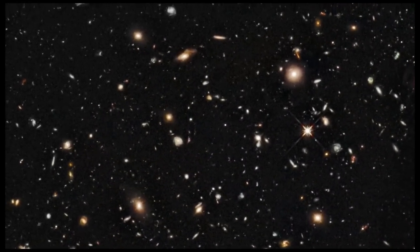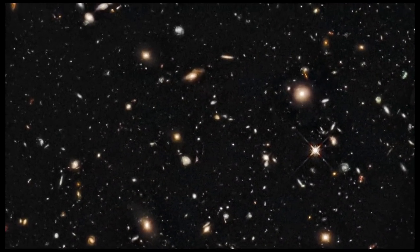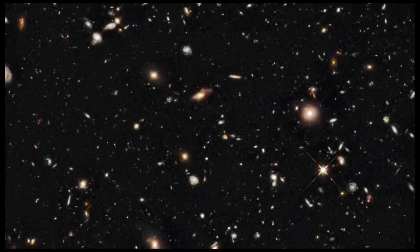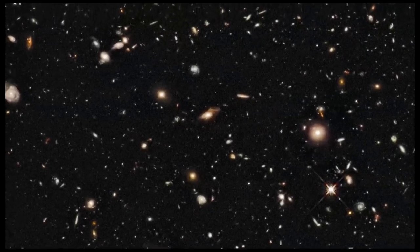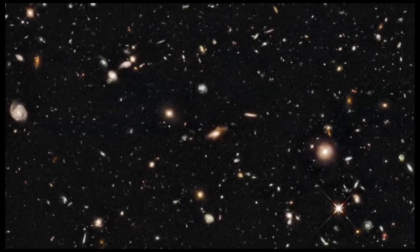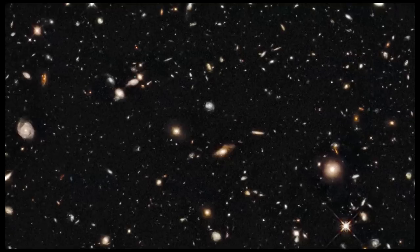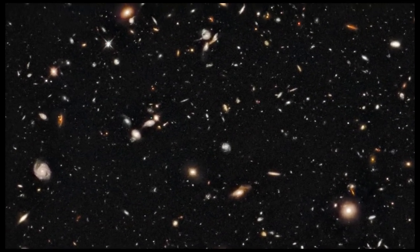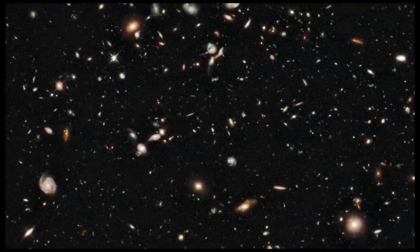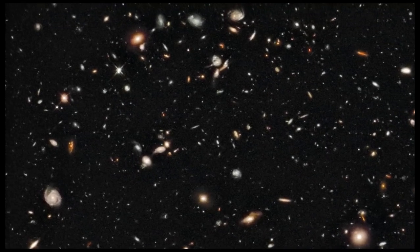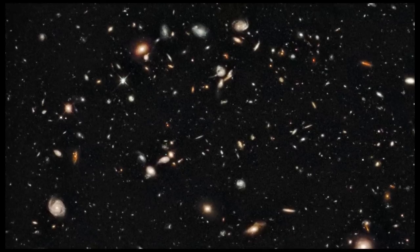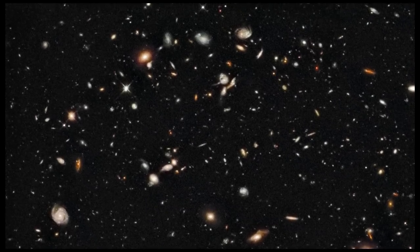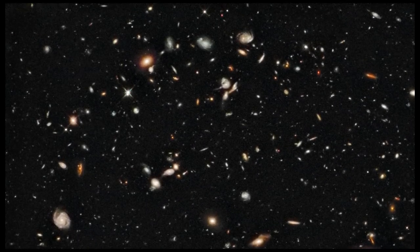Some of the flecks of light in this fuzzy image are just anomalies within the light detectors, but among them are faint impressions of early galaxies. In this photo we are looking at some of the most remote objects ever seen. They are so distant that we see these galaxies as they were 13 billion years ago, when the Universe was only about 5% of its current age.